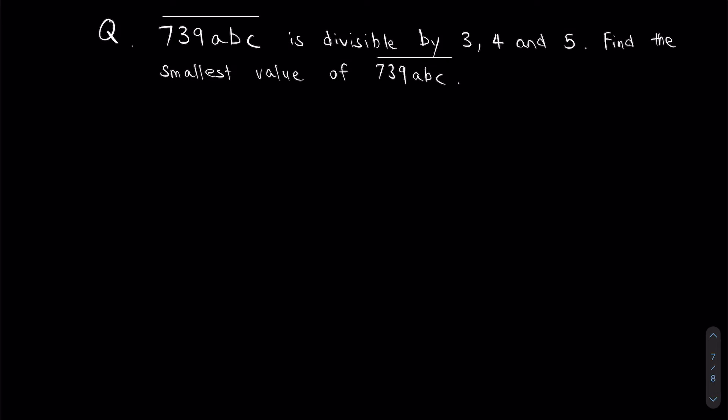Now let's quickly discuss, what does it mean for a number to be divisible by 3, 4 and 5? It means if you take that number and you divide it by 3, 4 or 5, it will leave a remainder of 0. That's pretty much it.